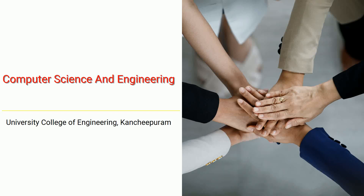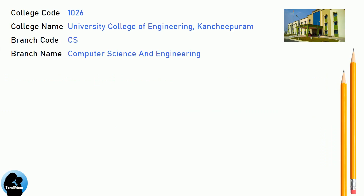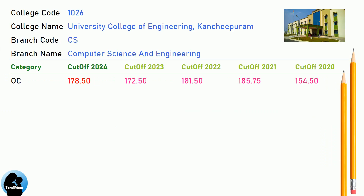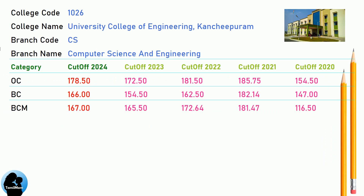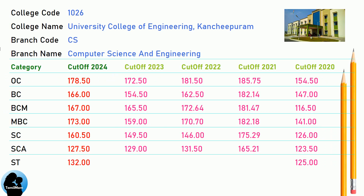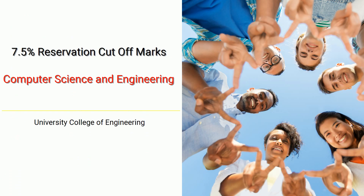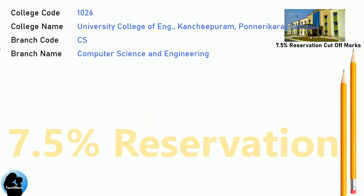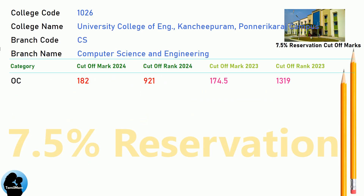DNA Cut-Off for University College of Engineering, Kanchipuram in Computer Science and Engineering. DNA 7.5 Reservation Cut-Off for University College of Engineering, Kanchipuram in Computer Science and Engineering.